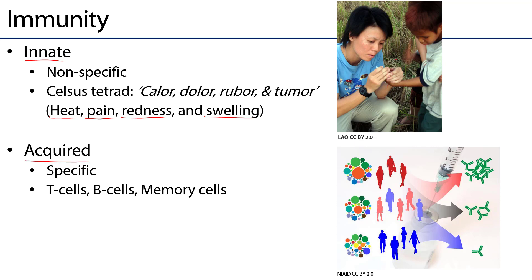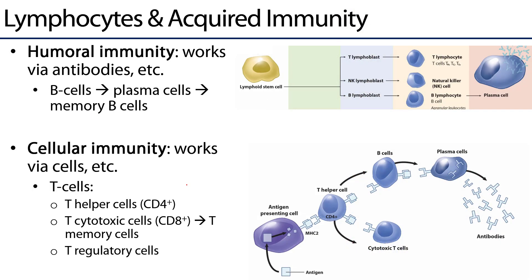There's also acquired immunity, which is specific. It requires exposure to a pathogen in order to build a tailored response to it. There are many different ways acquired immunity can work, but the two major ways are cell-mediated immunity and humoral or antibody-mediated immunity. Lymphocytes — T cells, B cells, and their derivatives — are the modulators of acquired immunity.